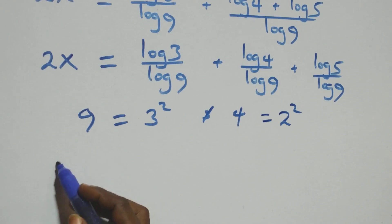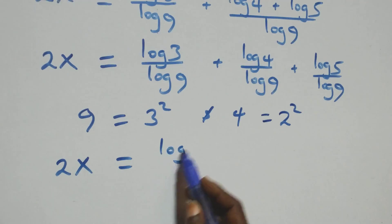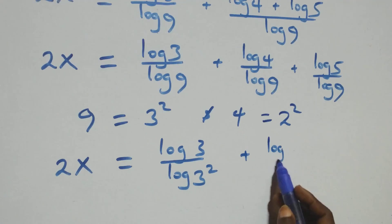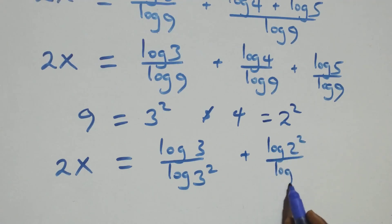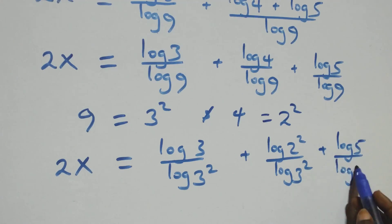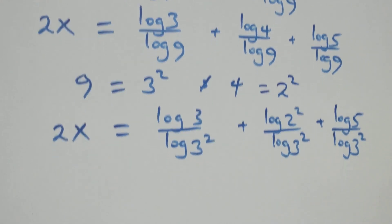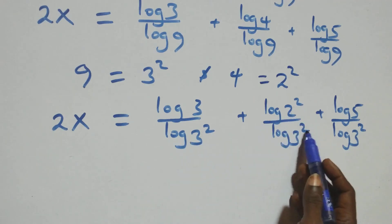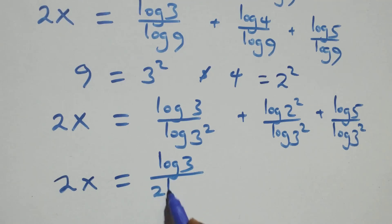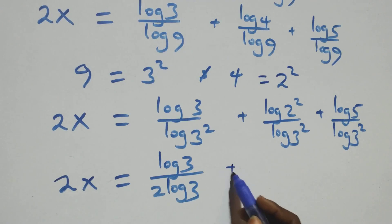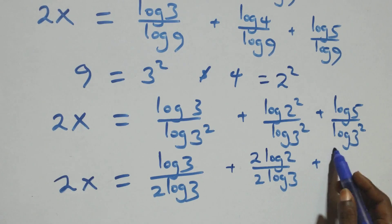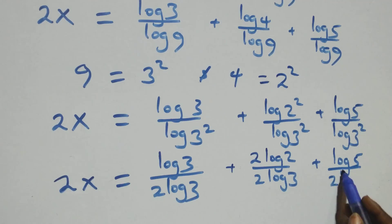What we have here becomes 2x equals to log 3 over log(3 squared) plus log(2 squared) over log(3 squared) plus log 5 over log(3 squared). Applying the power rule, the 2 comes down in each term: 2x equals to log 3 over 2 log 3 plus 2 log 2 over 2 log 3 plus log 5 over 2 log 3.